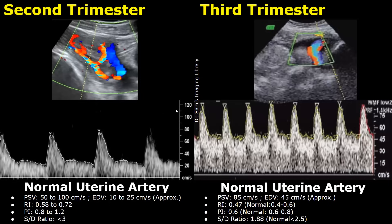The resistive index is usually between 0.58 to 0.72. The pulsatility index is between 0.8 to 1.2, and the SD ratio is normally less than 3.